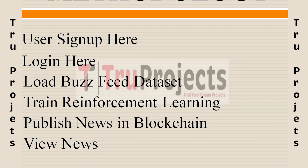The 'Publish News in Blockchain' module allows users to publish news articles on the blockchain after the reinforcement learning algorithm classifies them as real or fake. Validated news articles are stored securely using smart contracts, ensuring integrity and immutability. The 'View News' module permits users to view published news along with their classification — real or fake — ensuring transparency and allowing users to verify the authenticity of stored news.